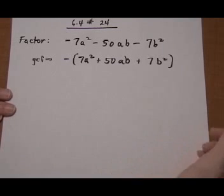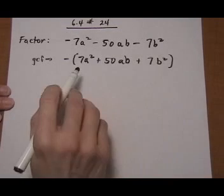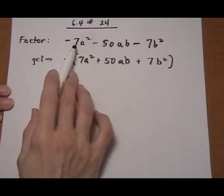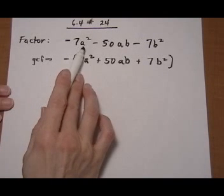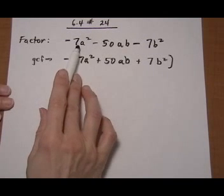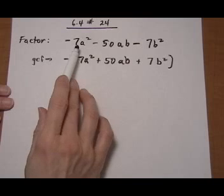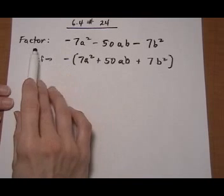So first thing you always do is look to pull out a GCF. And generally, if your first term, the x squared term or the a squared in this case, has a negative in front of it, take out the negative.